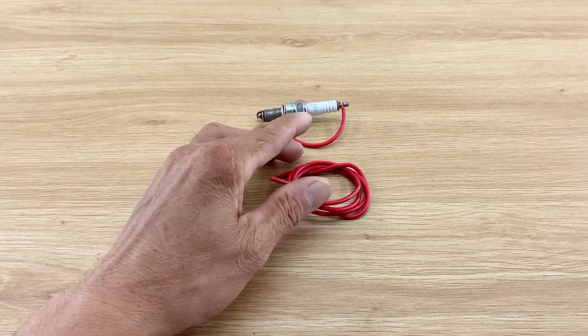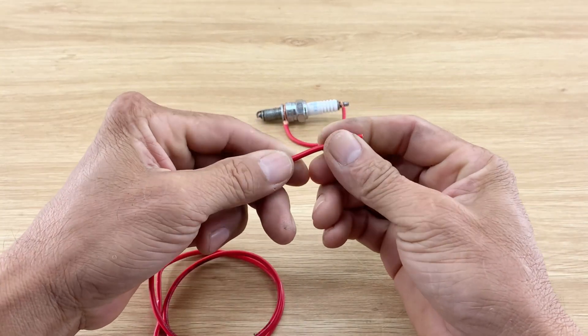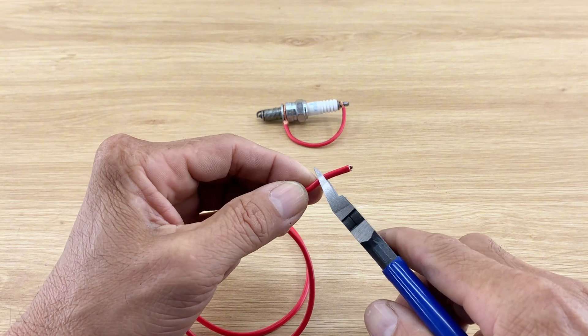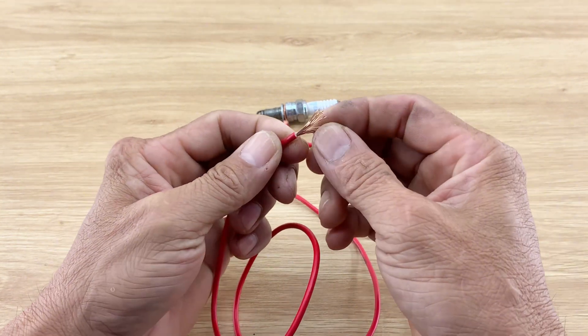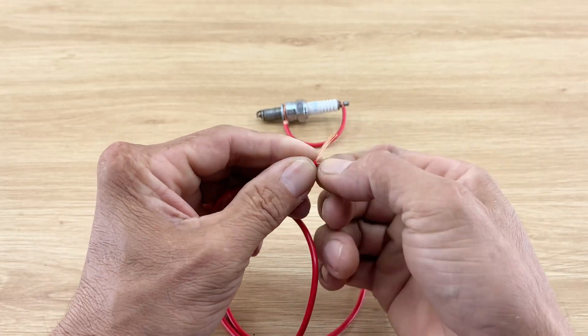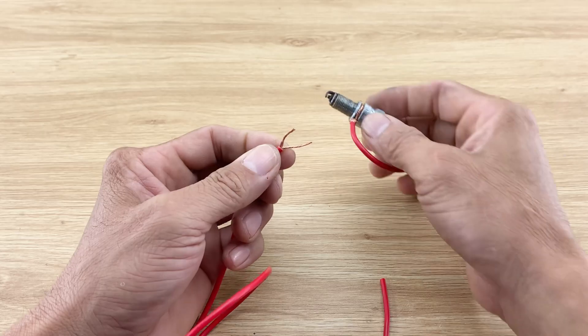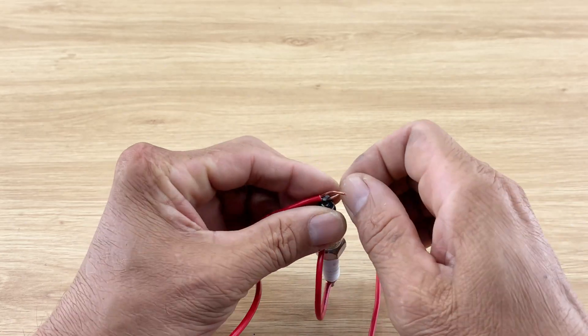Next, I prepared a longer red wire. I use pliers to strip the outer insulation and split the copper core into two parts.